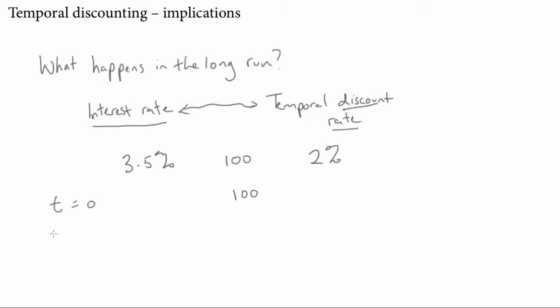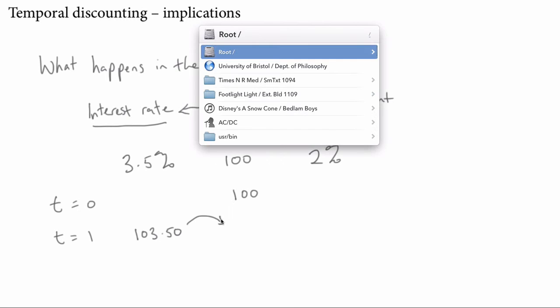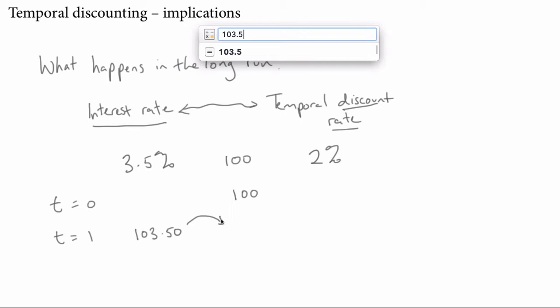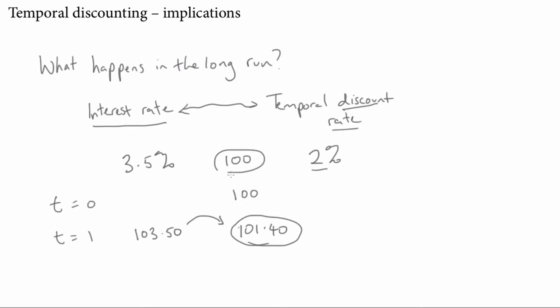If I put it in the bank and wait one year, it's going to go up to $103.50 in terms of cash. But for me right now, I have to discount that by 2%, so that's going to be worth something like $101.40. Although the cash goes up by 3.5%, the value to me comes down by my personal discount rate of 2%, but still $101.40 is better than $100, so for this person with a low discount rate it's worthwhile saving.